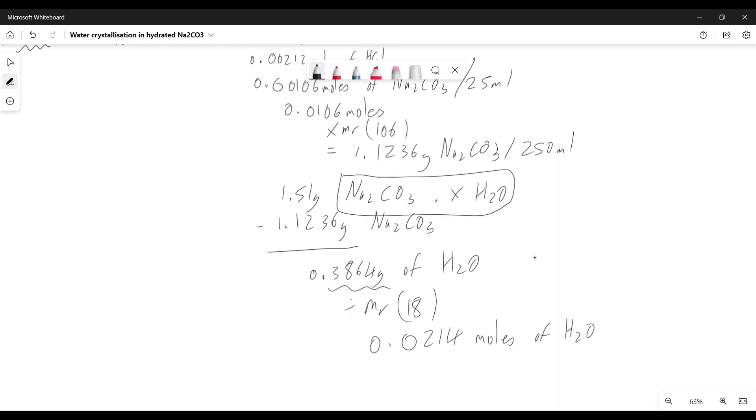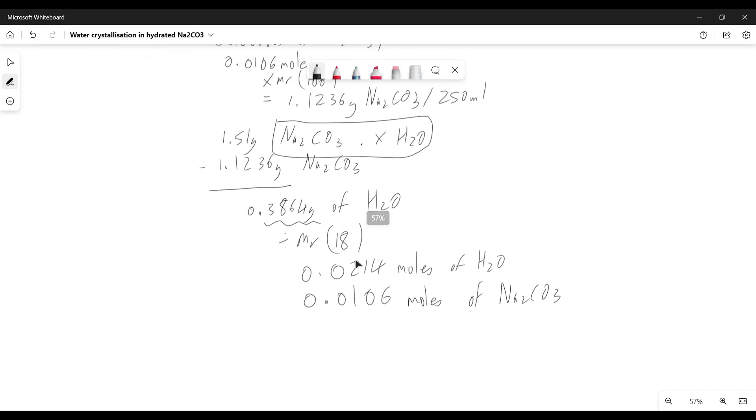We know from earlier that we had 0.0106 moles of sodium carbonate. To figure out the ratio of these, we can divide the larger one by the smaller one. So if we divide this one, water, by sodium carbonate, we would get roughly two. Therefore we can say there are two water molecules per sodium carbonate molecule.